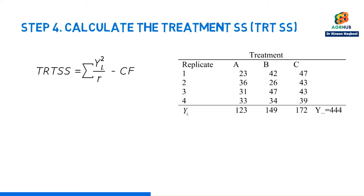Alright, let's do this together. We'll take each total 123, 149 and 172, square them, then divide by the number of values we add to 4.